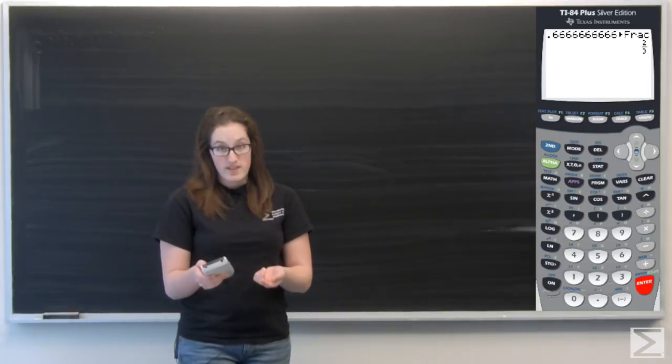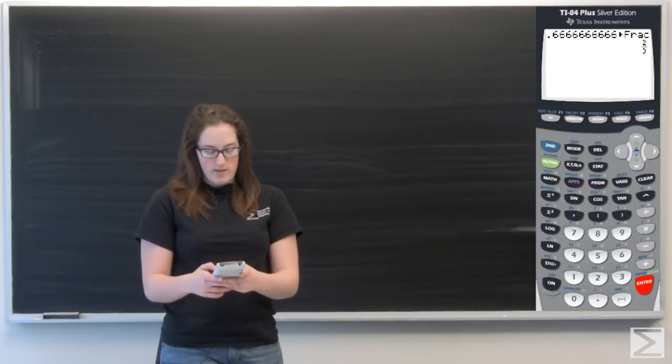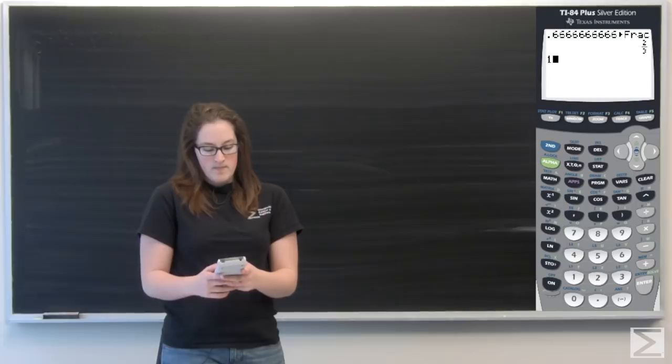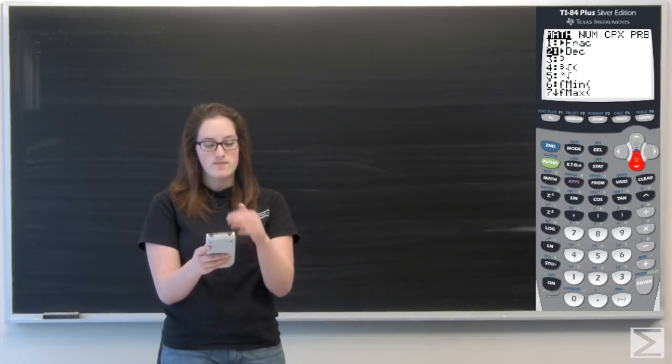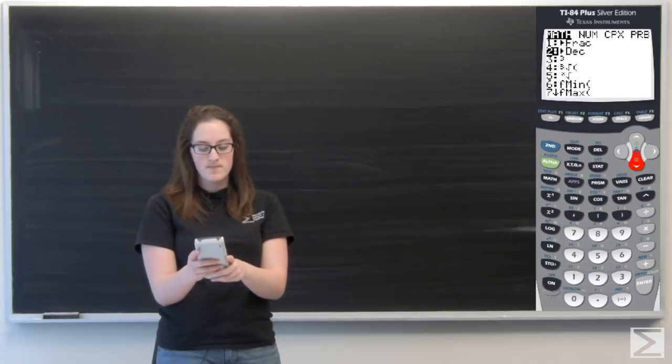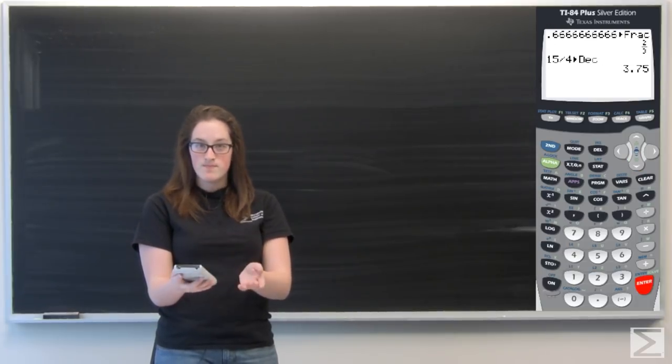And likewise, it can work the other way. So I can type in a fraction, let's say 15 over 4. And I can go to math, scroll down to the second thing, DEC, decimal. And I hit enter and it gives me the decimal for that fraction. So that's pretty cool.